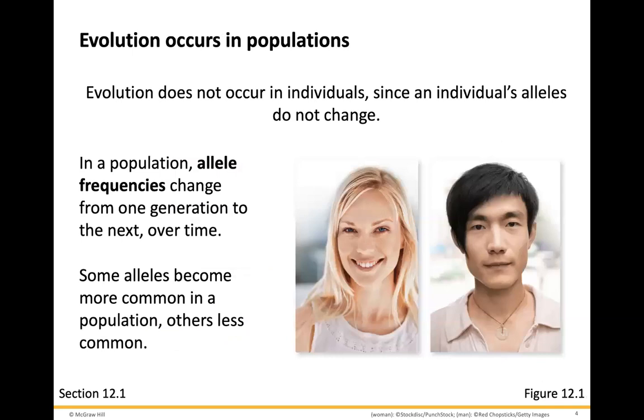Evolution does not occur in individuals, since an individual's alleles do not change. In a population, allele frequencies will change from one generation to the next over time. You personally will not see any evolutionary changes, but as the species evolves, that's when you can start to see some changes. Some alleles will become more common in a population, others will become less common.